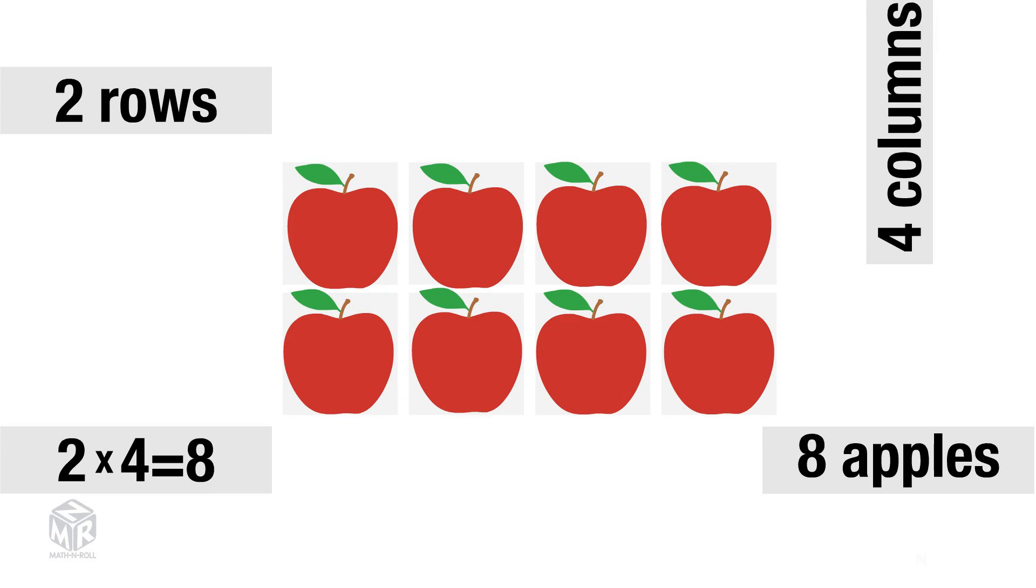The first factor, 2, shows how many rows we have. The second factor, 4, shows how many columns we have. Together, we have 8 apples. So, 2 times 4 equals 8.